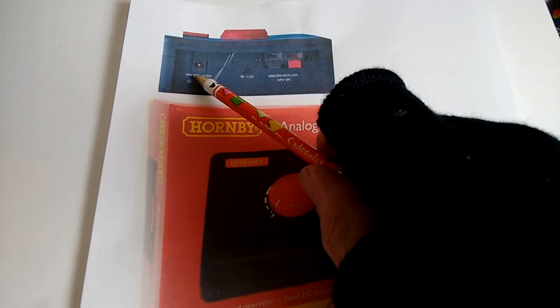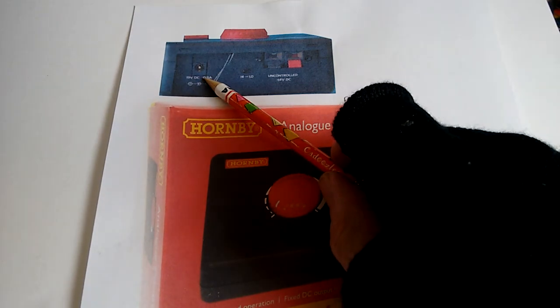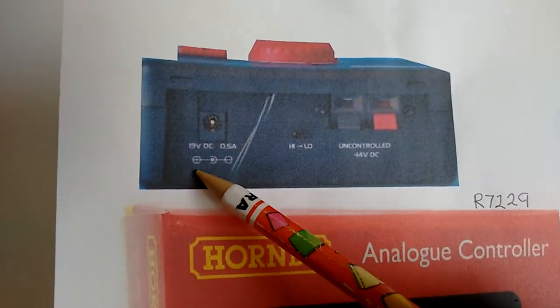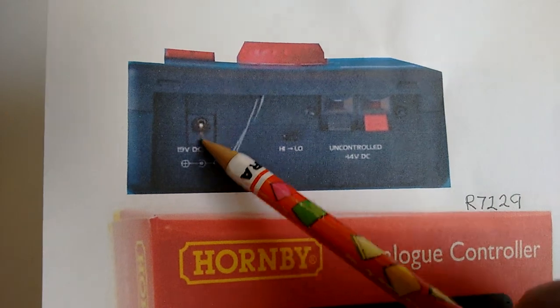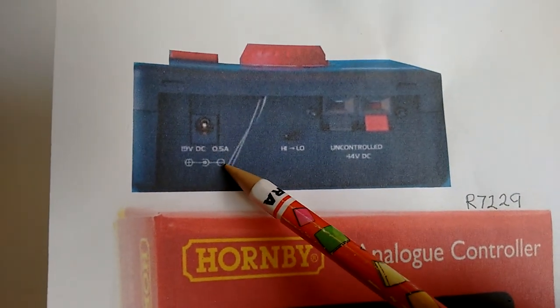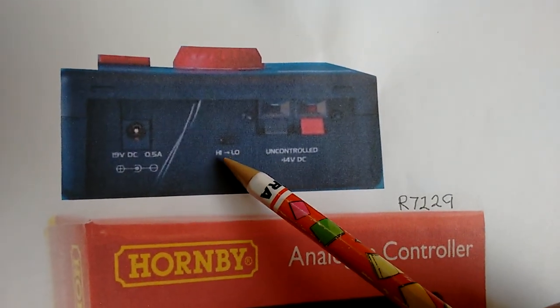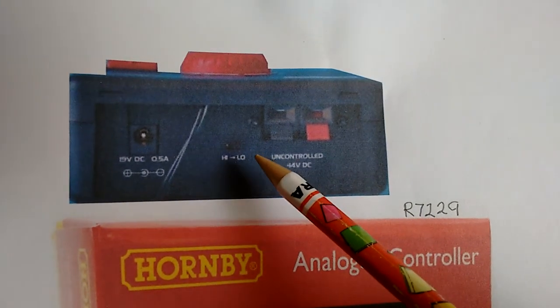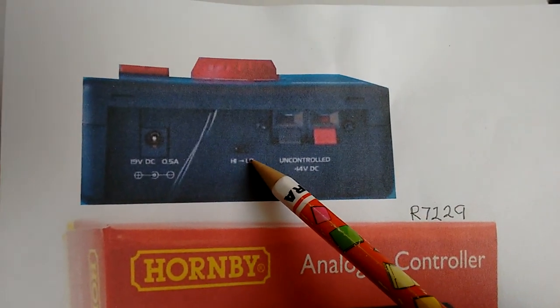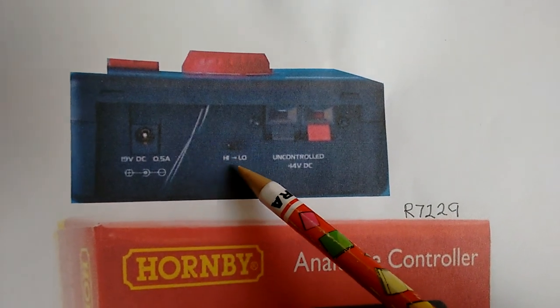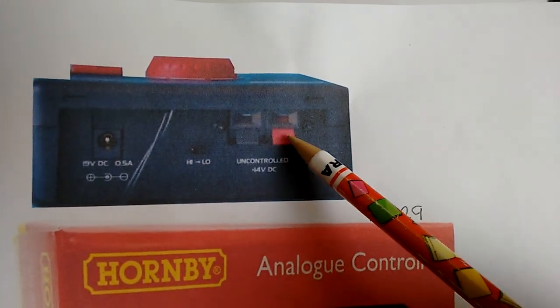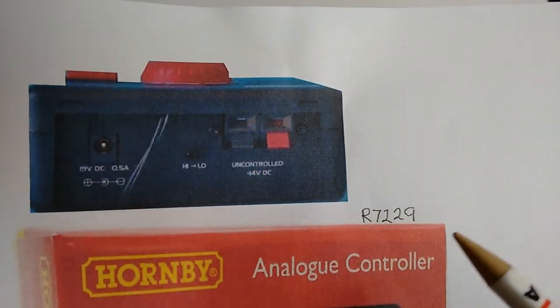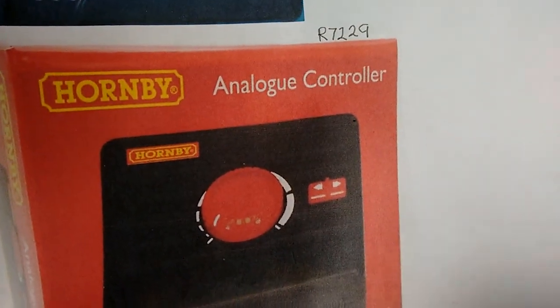On the back of the gizmo, we have an input here for a 19 volt, half amp input with the positive in the center and the negative around the outside. We have a high-low switch so that if it's connected onto low, it shouldn't be able to shoot the engine away, suitable for small children so they can't just mess it up. And here we have an uncontrolled output, which is supposed to be 14 volts DC with nice little clips. So it seems a nice little gizmo.